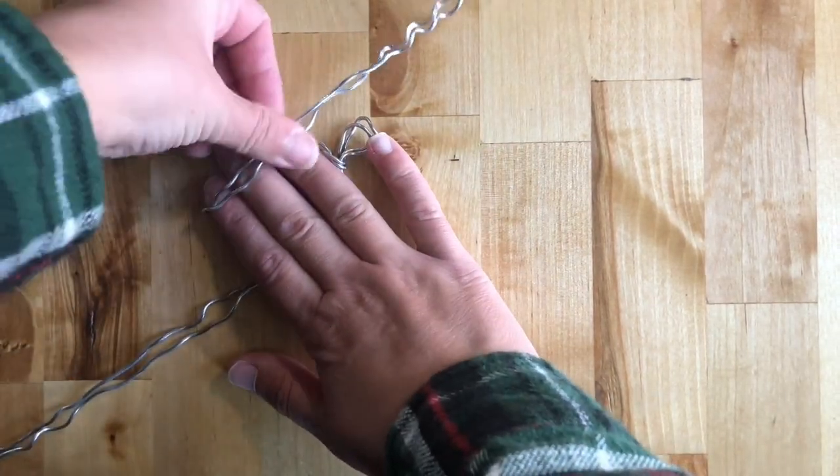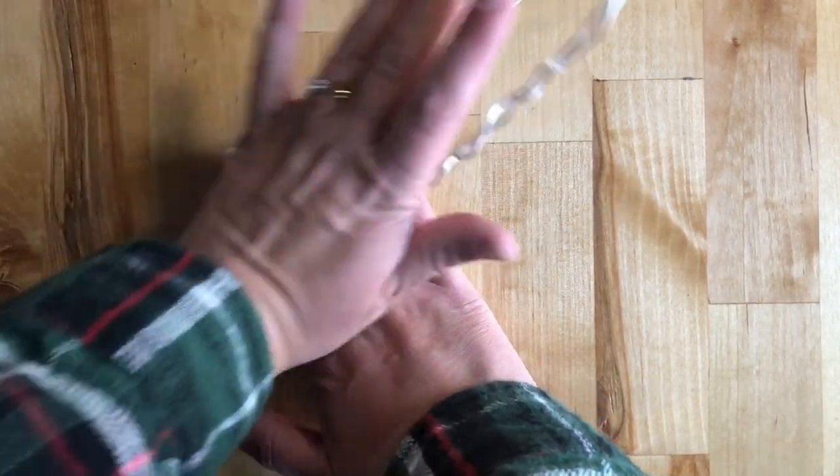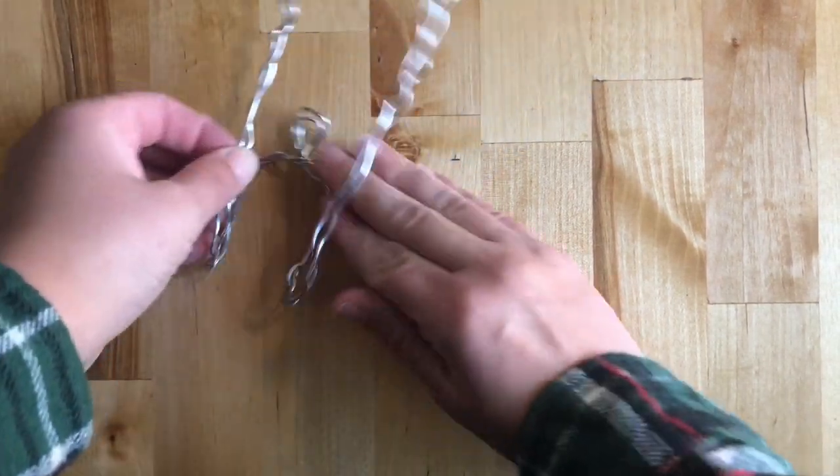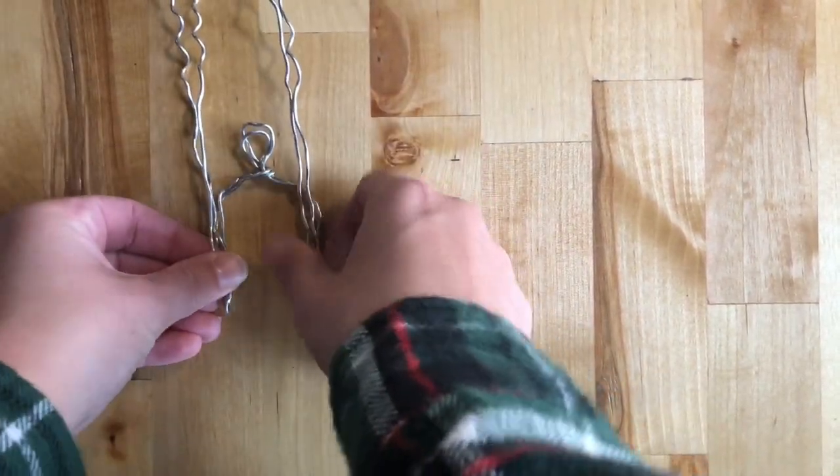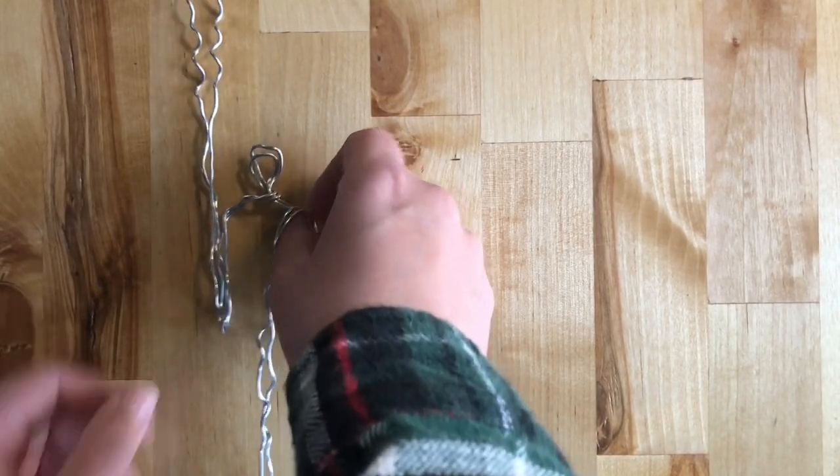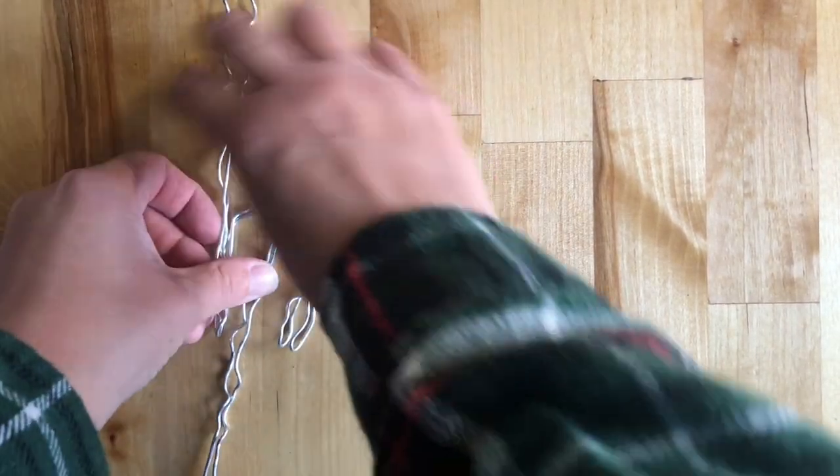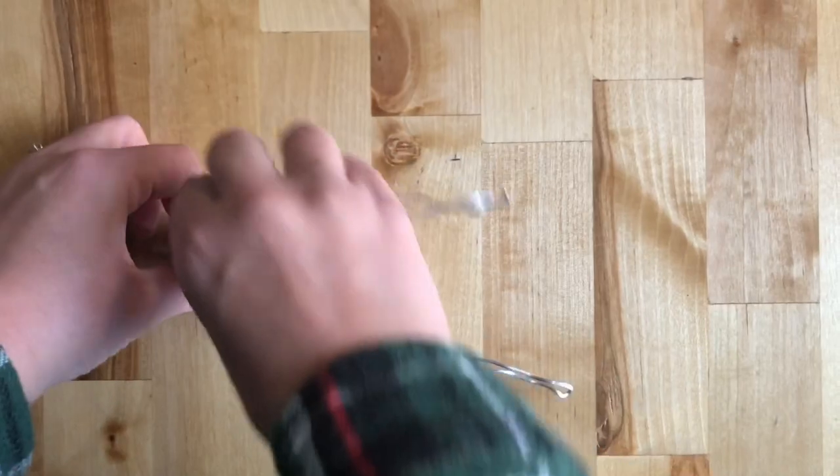Then you're gonna put your hand down using three fingers as a measurement. You're gonna fold the wires up and over your fingers. You can mold that into place and then pinch at the shoulder. Pull down to create the spine and do the same thing on the other side.